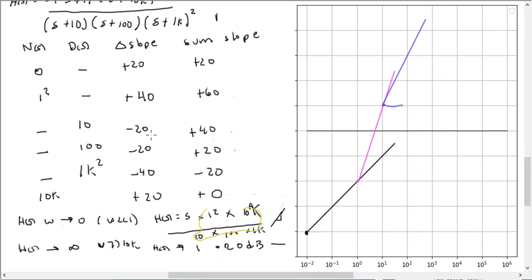And then, even when we go to 100, the slope, while it might not be 40, it's still 20, and so it's climbing up.